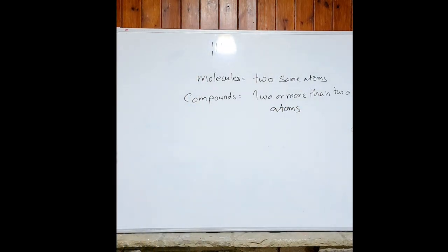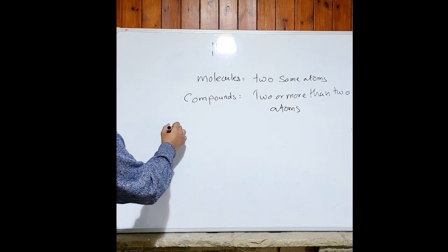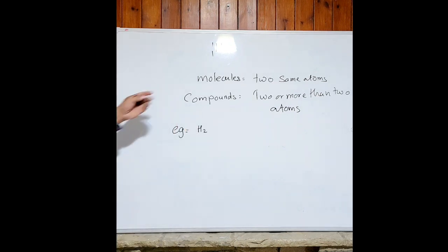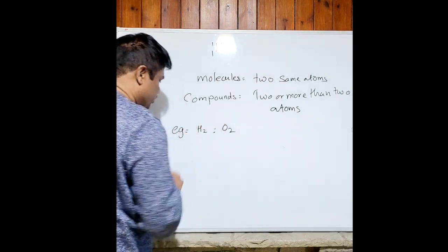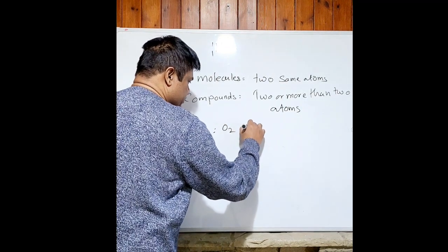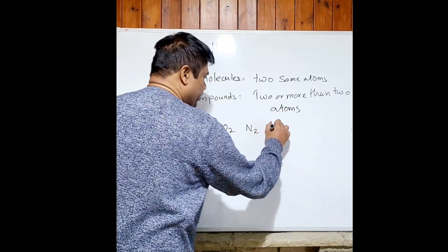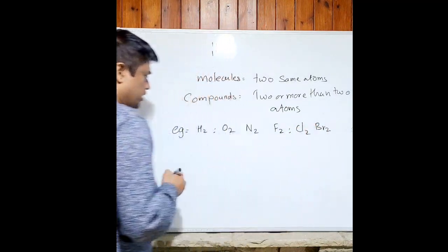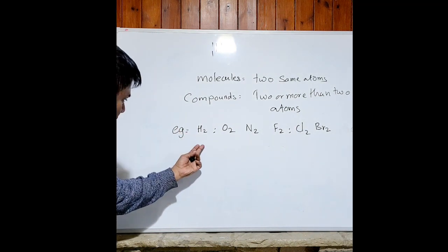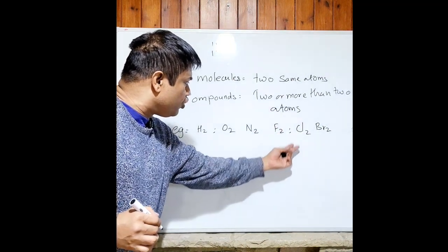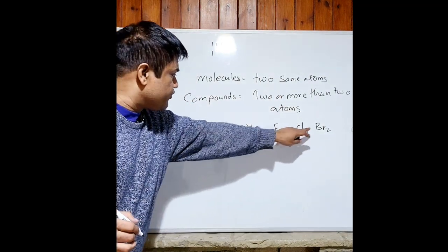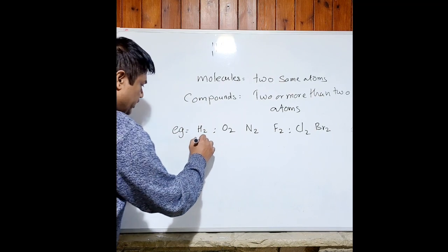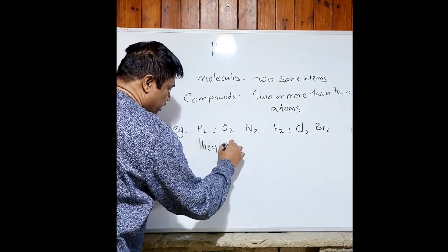Examples of molecules: hydrogen gas (H2), oxygen gas (O2), nitrogen gas (N2), chlorine gas (Cl2), fluorine gas (F2), and bromine gas (Br2). These are the six diatomic gases present in nature — they are diatomic, meaning two of the same atoms bonded together.